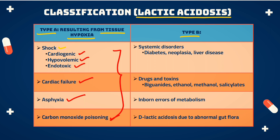Type B lactic acidosis can develop because of systemic disorders, which include diabetes, neoplasia, and liver disease. Apart from that, lactic acidosis can also develop from some drugs and toxins. As already discussed, biguanides — hypoglycemic agents — can also lead to lactic acidosis. Additionally, if a person is consuming ethanol, methanol, or salicylate, lactic acidosis can also develop.